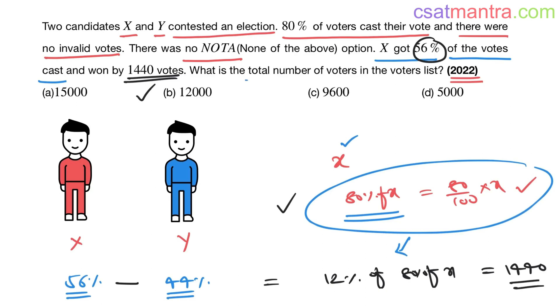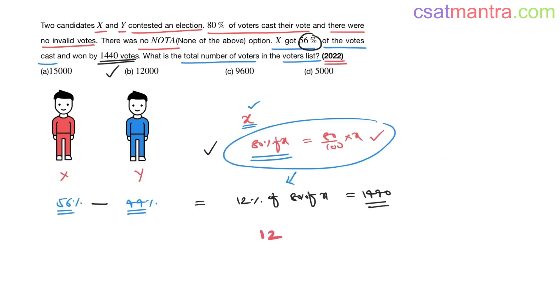What is the total number of voters in the voters list? That is X. We want X now. 12 percent, that means 12 by 100 into 80 percent, 80 by 100 into X is equal to 1440.